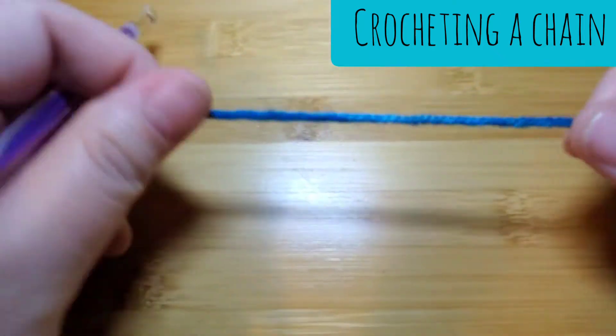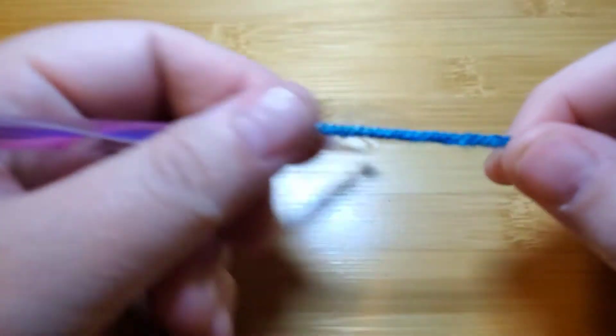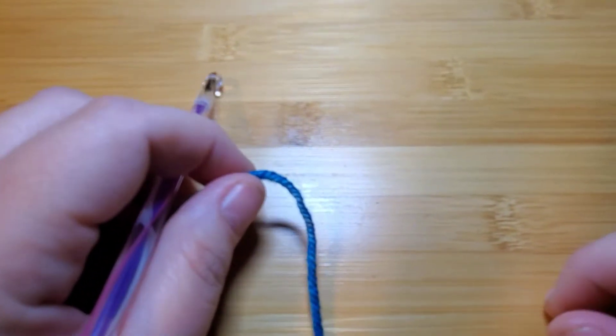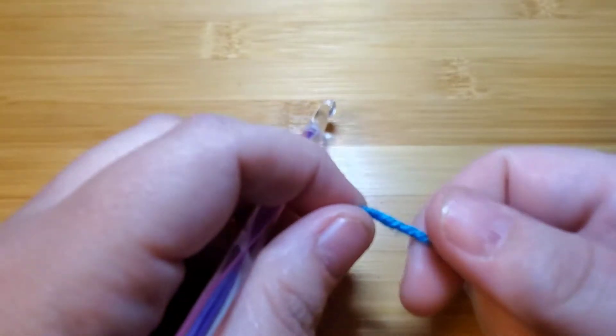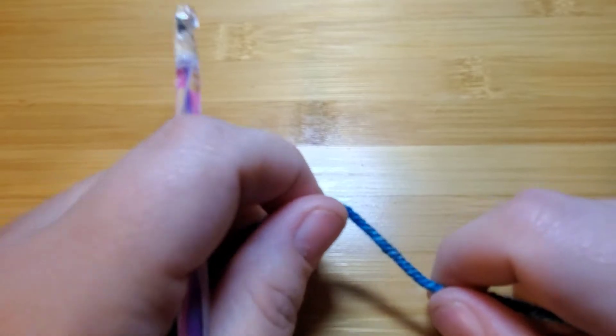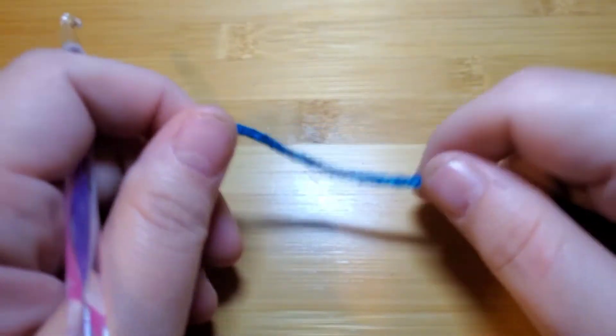This is a video on how to make a chain stitch, the very basic stitch that you need for all other crochet things. In this video, I'm going to show you a left-handed chain because I am left-handed.